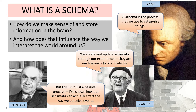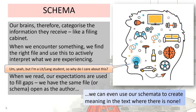Beginning with Kant, who proposes this idea of schemas being processes that we use to categorize things. Piaget then says that we are creating and updating schemata through our experiences, especially in childhood, and they provide frameworks of knowledge through which we interpret the world. Finally, psychologist Bartlett proposes that these frameworks for our experience are not just passive, but that schemata actually affect the way we perceive events and that we use our schemata in the construction of meaning. And this can be identified in literature that we read, where we bring existing frameworks of knowledge and use them to interpret the text.